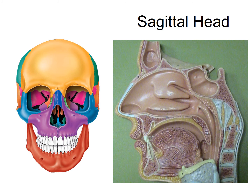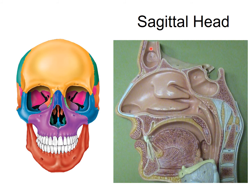I wanted to show you those nasal conchae from another view. This is the sagittal head model — imagine cutting the skull right down the middle and opening it like a book. Here's the frontal bone, and then behind the nose, the nasal cavity. This is the inferior nasal concha, and this is the middle nasal concha. There is also a superior nasal concha, but you can't see it from an anterior view. Be able to identify the nasal conchae from both the sagittal head model and a skull.